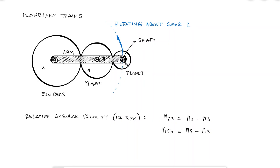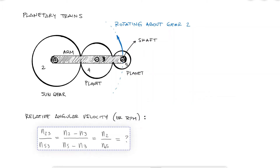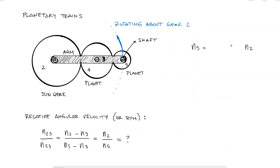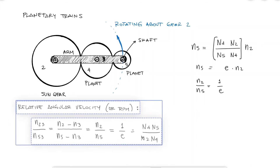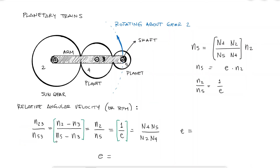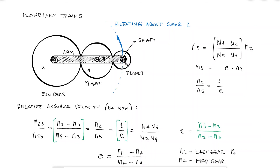By dividing the equations, we see that n23 over n53, which is just n2 over n5 since their point of reference (the arm 3) is the same. For any gear train, this would be exactly the reciprocal of the train value E. In general, the train value for a planetary gear system will be the speed of the last gear minus the speed of the arm, over the speed of the first gear minus the speed of the arm.